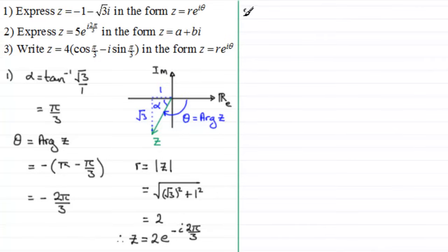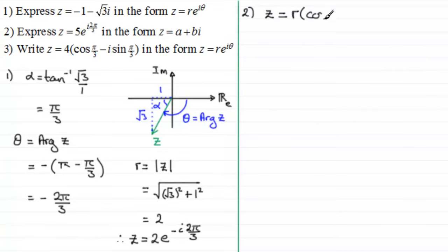In question two we've got to express the exponential form z equals 5e^(i·2π/3) in the form z equals a plus bi. The quickest easiest way is to use the mod-arg form of a complex number: z equals r multiplied by (cos θ + i sin θ), where theta is the argument and r is the modulus.